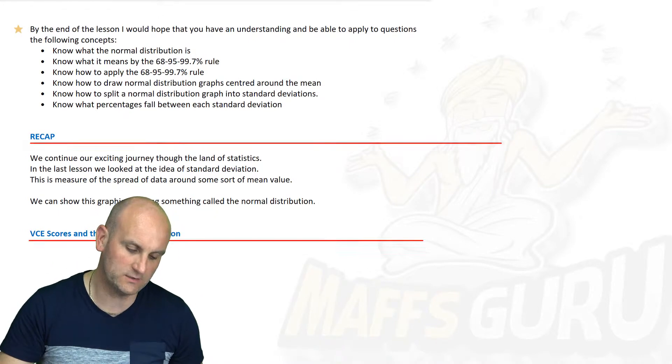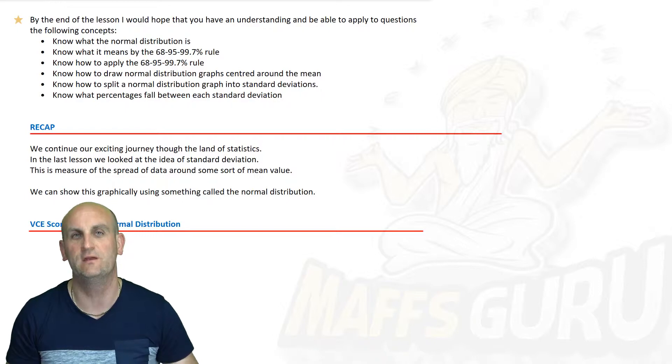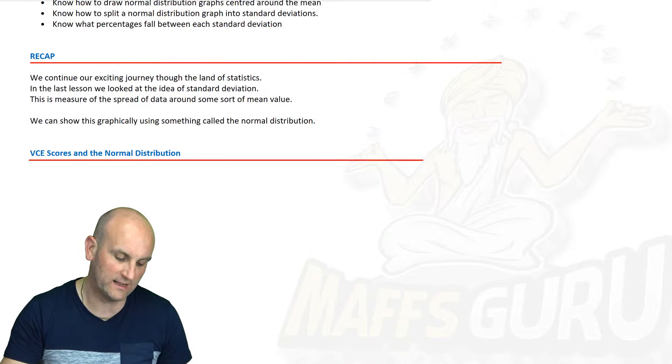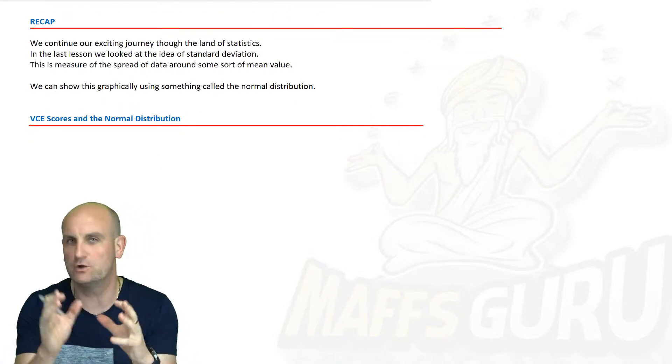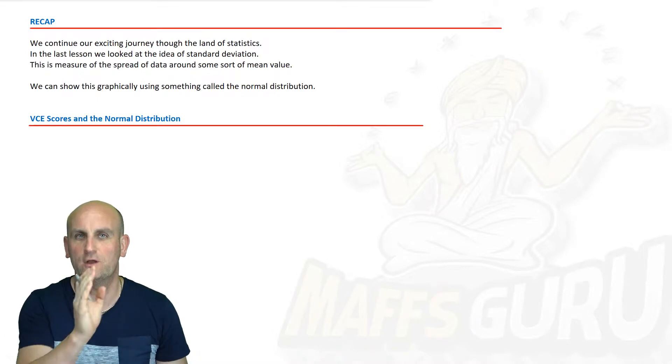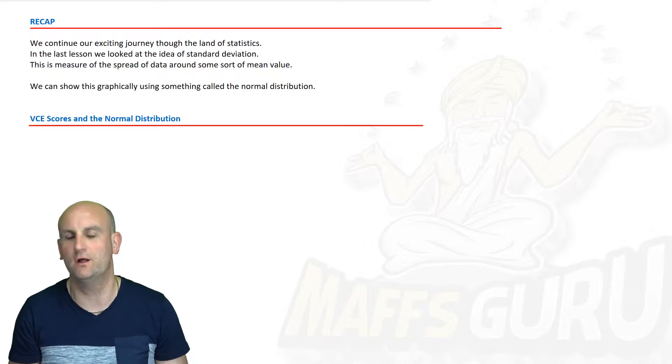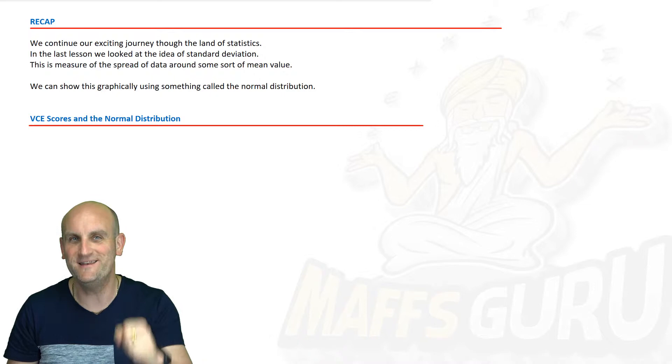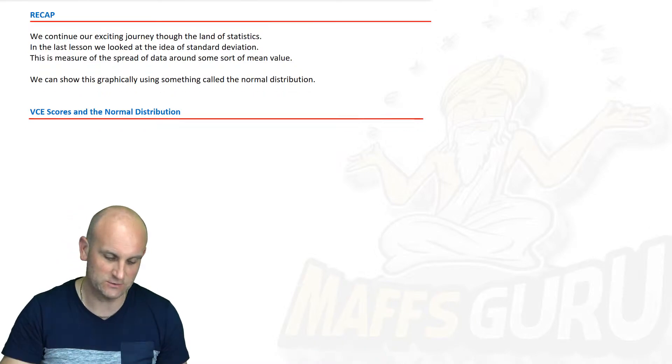By the end of this video we are going to look at and know what the normal distribution is and what the 68-95-99.7% rule is and how to apply it to all sorts of questions. In a previous video we looked at what standard deviation was and this magical mythical thing that allowed us to look at a mean value and split sections.